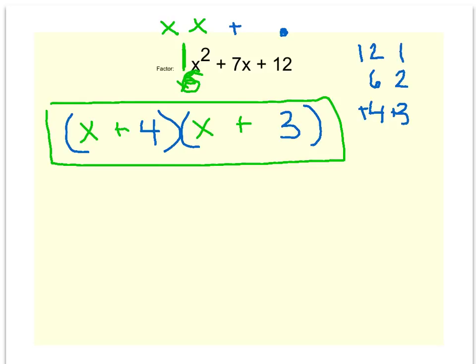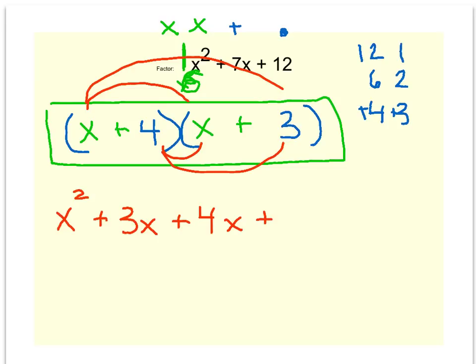Now let's check our answers. We'll do some foiling first, outside, inside, last. x times x is x squared. x times 3 is a plus 3x. 4 times x is a plus 4x. And 4 times 3 is a plus 12. When you combine those like terms in the middle, you get back to where you started. So we know that we factored correctly where the quantity of x plus 4 times the quantity of x plus 3 is our factored answer.